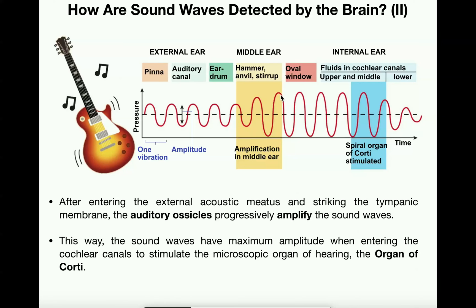By the time the vibrations reach the oval window, which leads into the fluids of the cochlea, the vibration is stronger than it was before it got to the auditory ossicles. It is not only the job of the auditory ossicles to communicate that vibration from the tympanic membrane to the oval window, but also to amplify it, so that the cochlea — the organ of hearing — has more, or stronger, vibrations to detect.